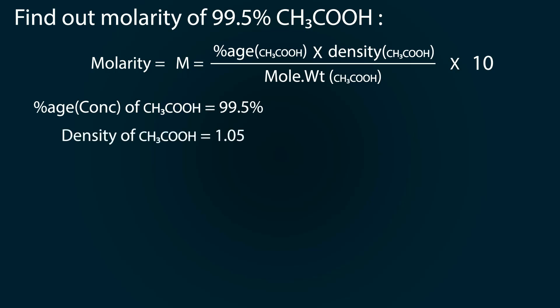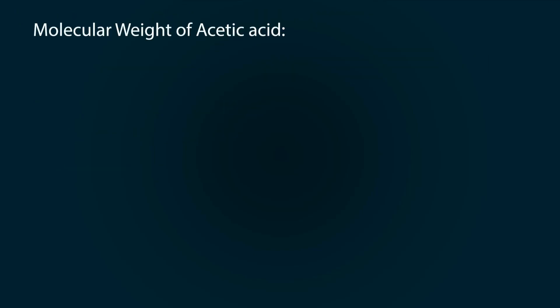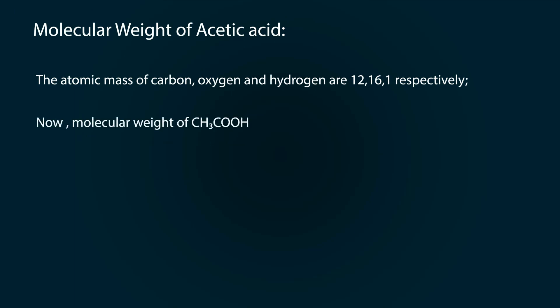So let's find out the molecular weight. For molecular weight of acetic acid, we have to find out the atomic number of carbon, oxygen and hydrogen, which is 12, 16 and 1 respectively. Now let's calculate: 12 plus 3 into 1 plus 12 plus 2 into 16 plus 1.